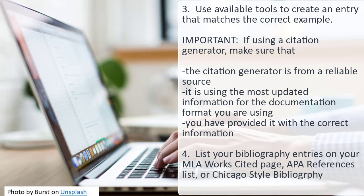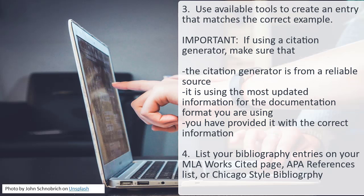Step 3: Use available tools to create an entry that matches the correct example. Many library databases and even some webpages contain a pre-made citation for that source, often provided in multiple formats. Look for these pre-made citations, but remember to check each one against the correct example that you found. If they don't match, you will need to make corrections or use another method. Another option is to use a citation generator. Citation generators are programs that assist you in creating bibliography entries. Some are online, like NoodleBib, available through the IVCC Library website.